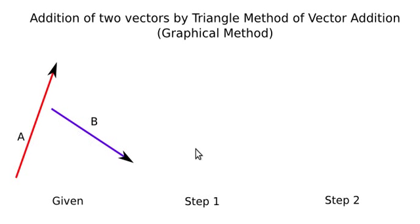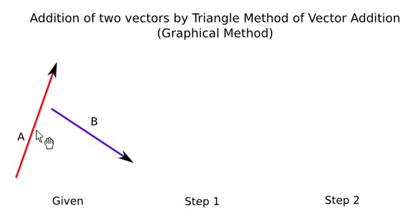In the first step, I will arrange the vectors such that the head of one vector is at the tail of another vector. For the first case, I will move the vectors such that the head of vector A is at the tail of vector B.